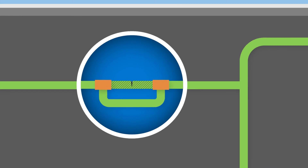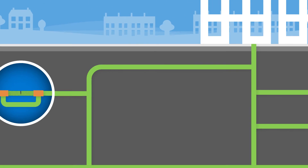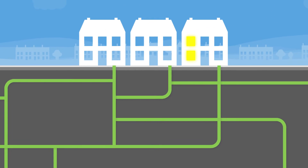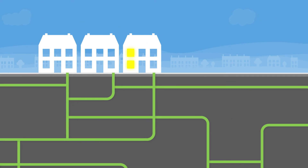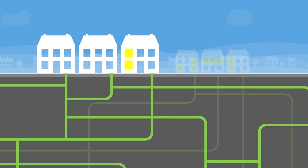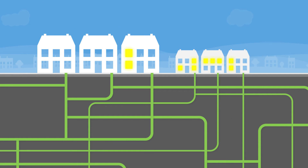Sometimes you may notice that not everyone on your street has lost power. This is due to the complex layout of the power cables and the pattern in which homes are connected, which can also make it trickier to locate the fault.